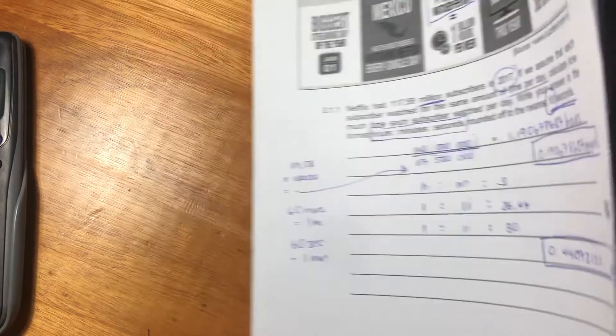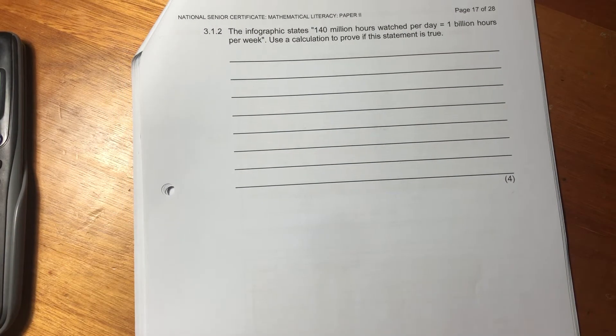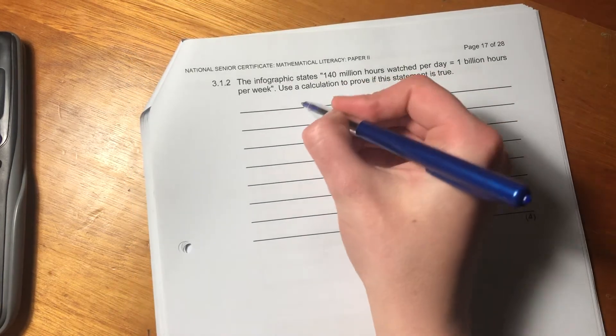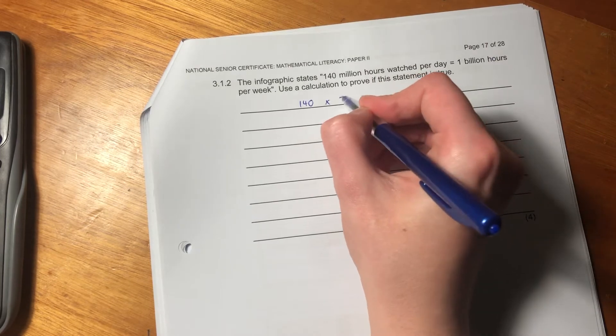Let's move on to the next question. The infographic states that 140 million hours watched per day equals 1 billion hours per week. Use the calculation to prove if the statement is true.